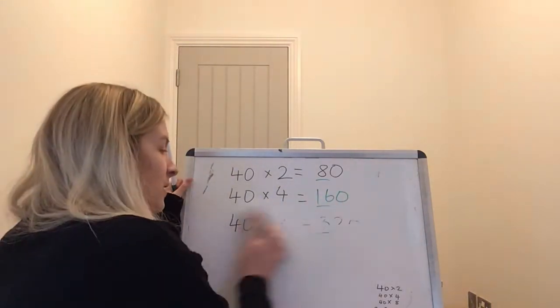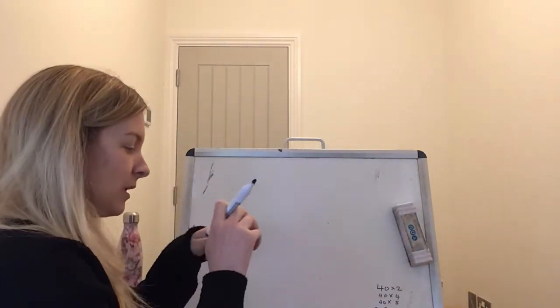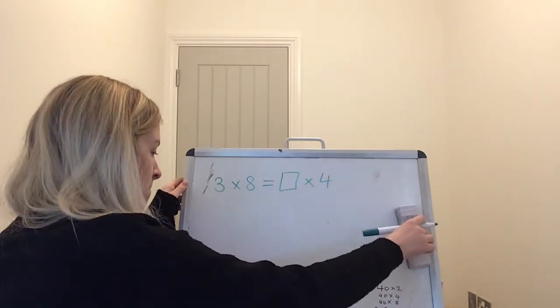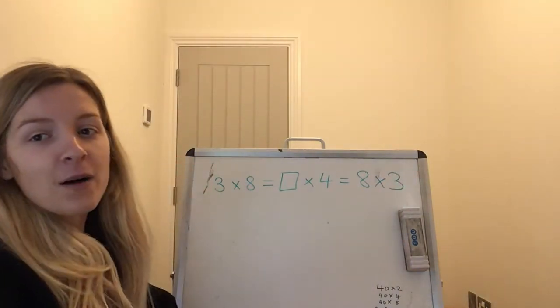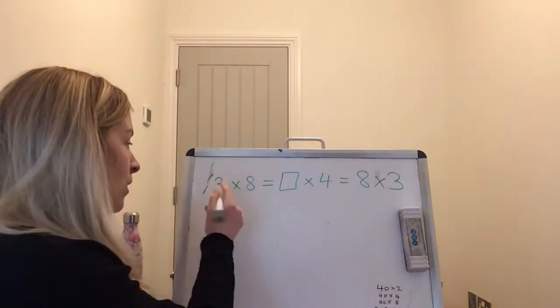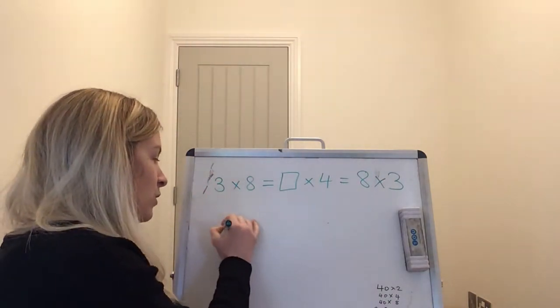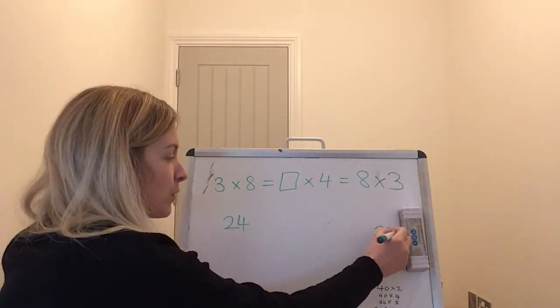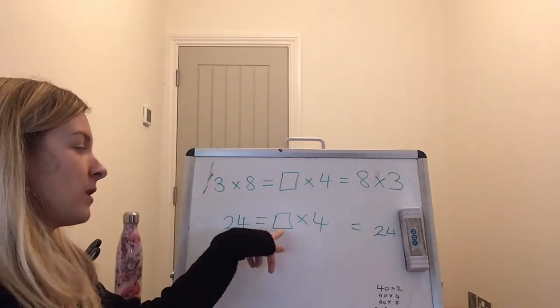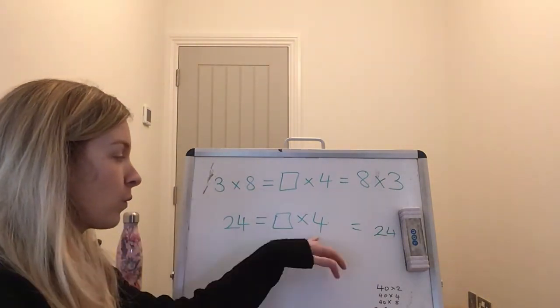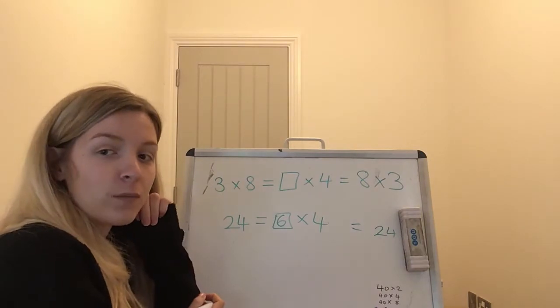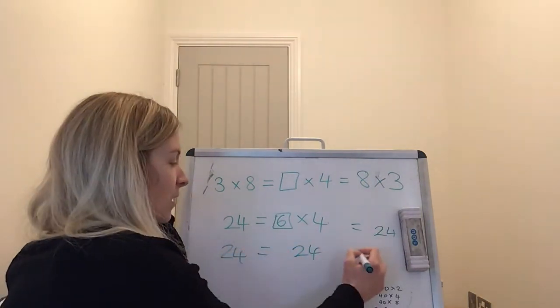Then you're also going to encounter some questions like this. Do not be alarmed by two equal signs. Just as we do with all missing box problems, we work out what we do know first. 3 lots of 8. We should be strong on our 8 times tables now, 24. Again, 8 times 3 over here is 24. Making sure we keep those equal signs in the same place. Then we have something times 4. So I need something times my 4 that's the same as 24. We could count in 4s until we get to 24. Or some of you may already know, 4 lots of 6 is 24. Then you'd have 24, 24, and 24.